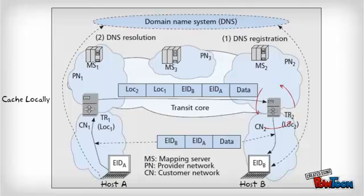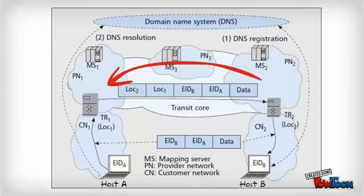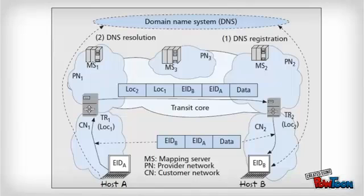In addition, tunnel router 2 locally caches the mapping from the endpoint identifier of host A to the ingress tunnel router's routing locator. When host B replies to host A, tunnel router 2 can use the cached mapping of the endpoint identifier of host A to tunnel the package to tunnel router 1. In this way, host A can obtain its desired service provided by host B.